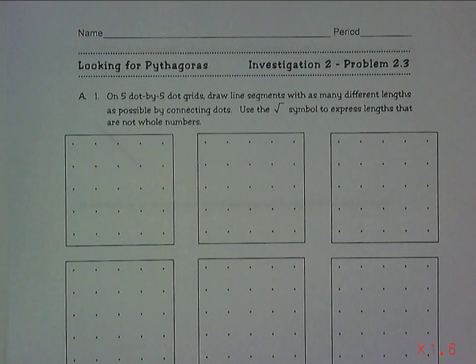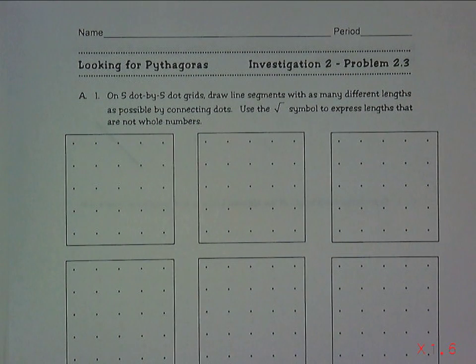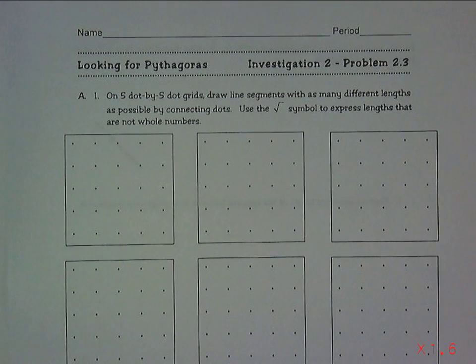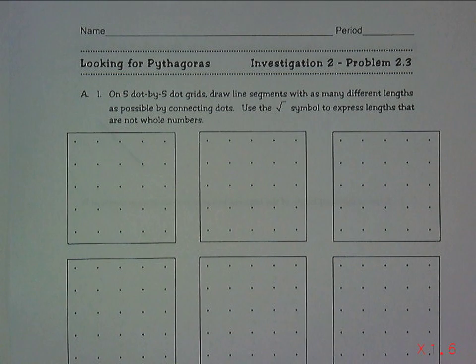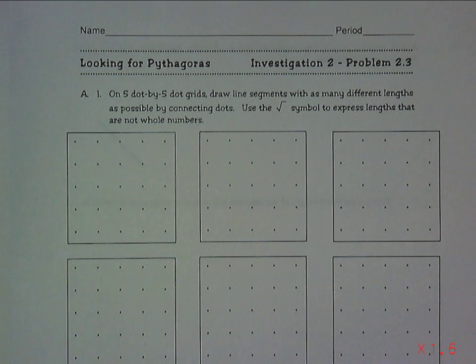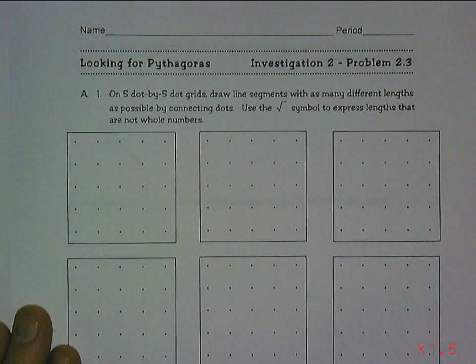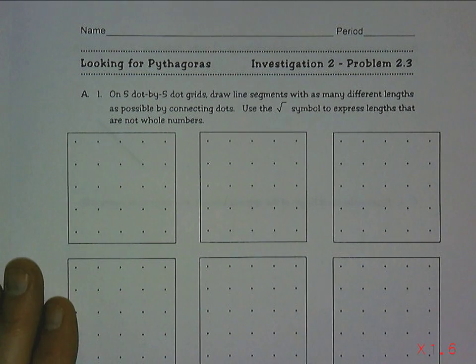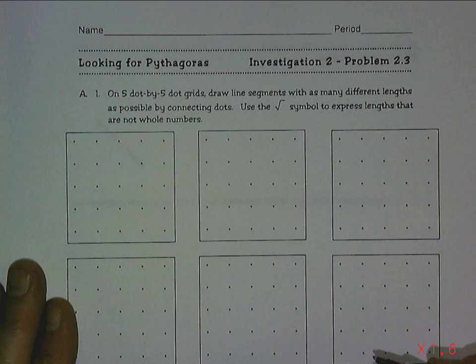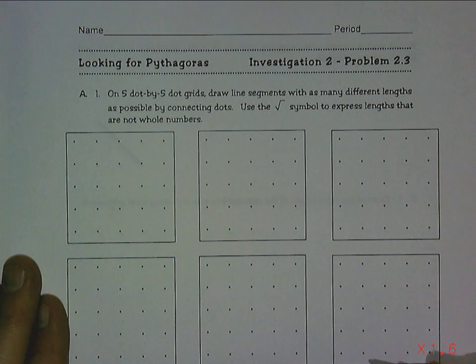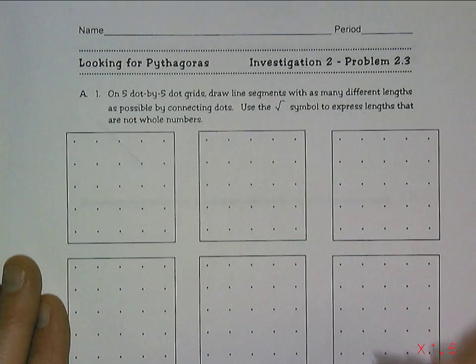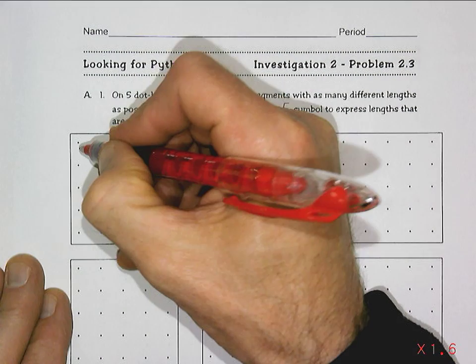Welcome to Looking for Pythagoras Investigation 2, Problem 2.3. I'm just going to do an introduction for this lesson just to get you started and make sure you understand how to find the lengths of lines on the 5x5 dot grid. So in this problem, you're asked to make line segments as many different lengths as possible, just within a 5x5 dot grid, and then list their lengths.